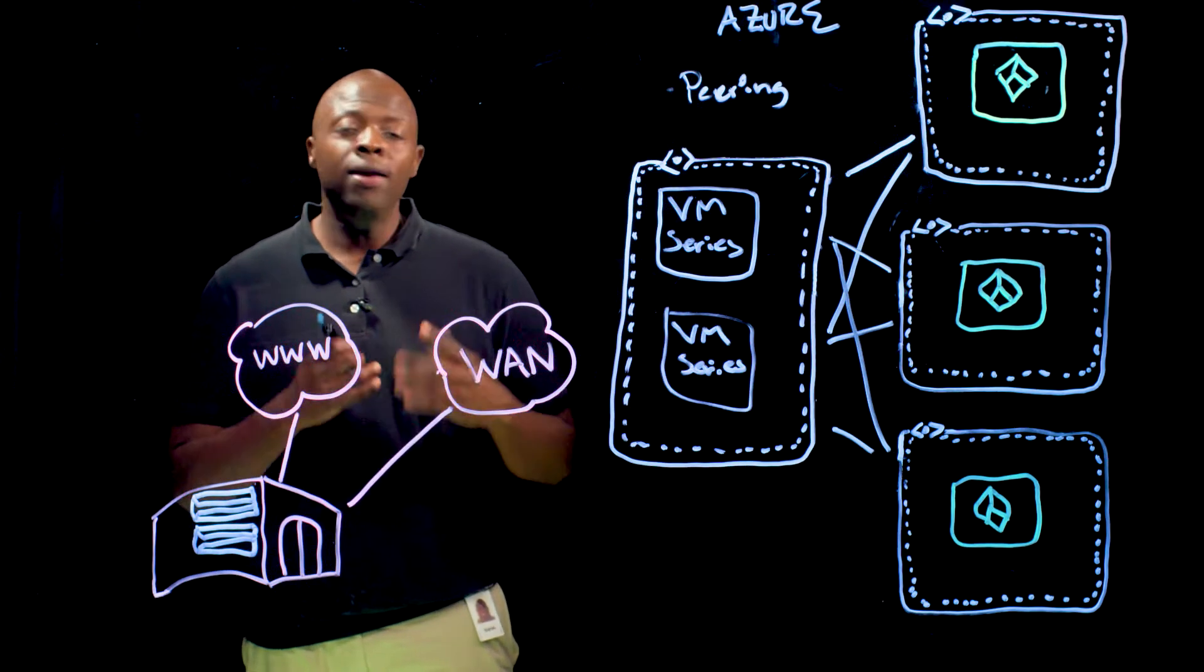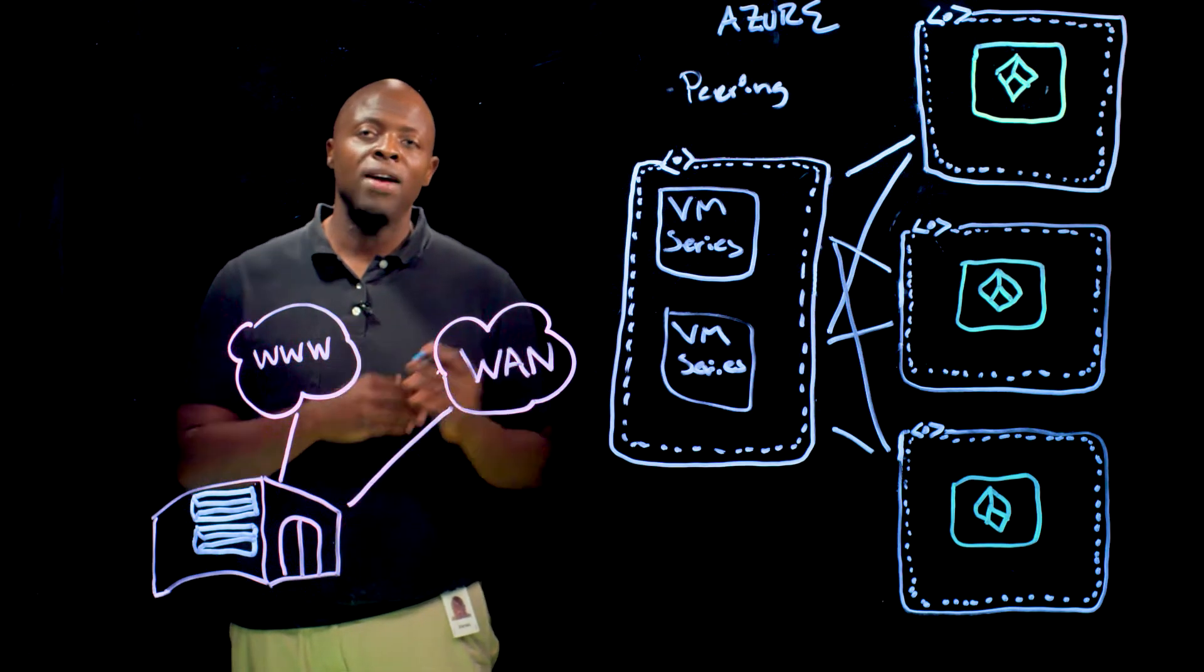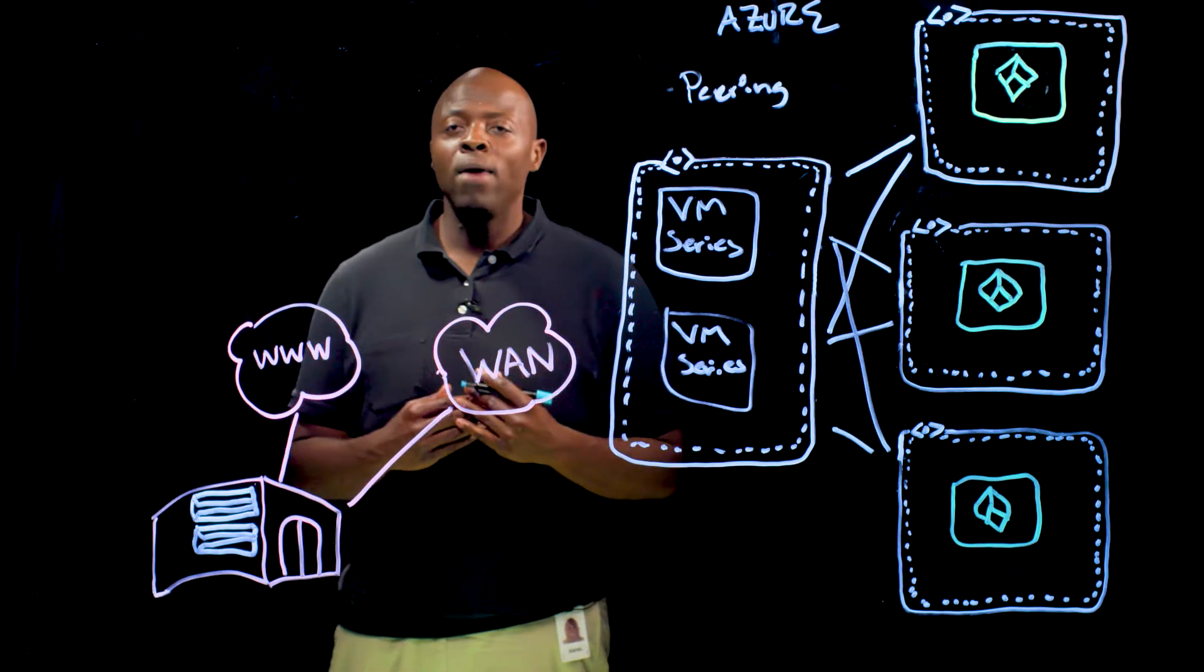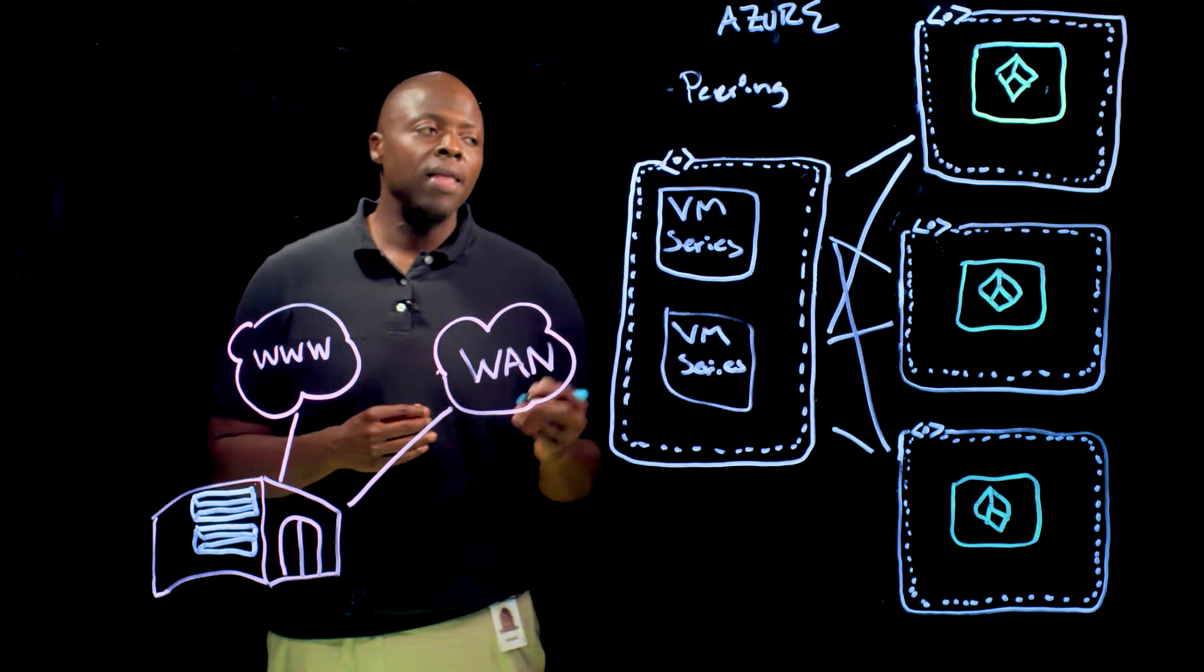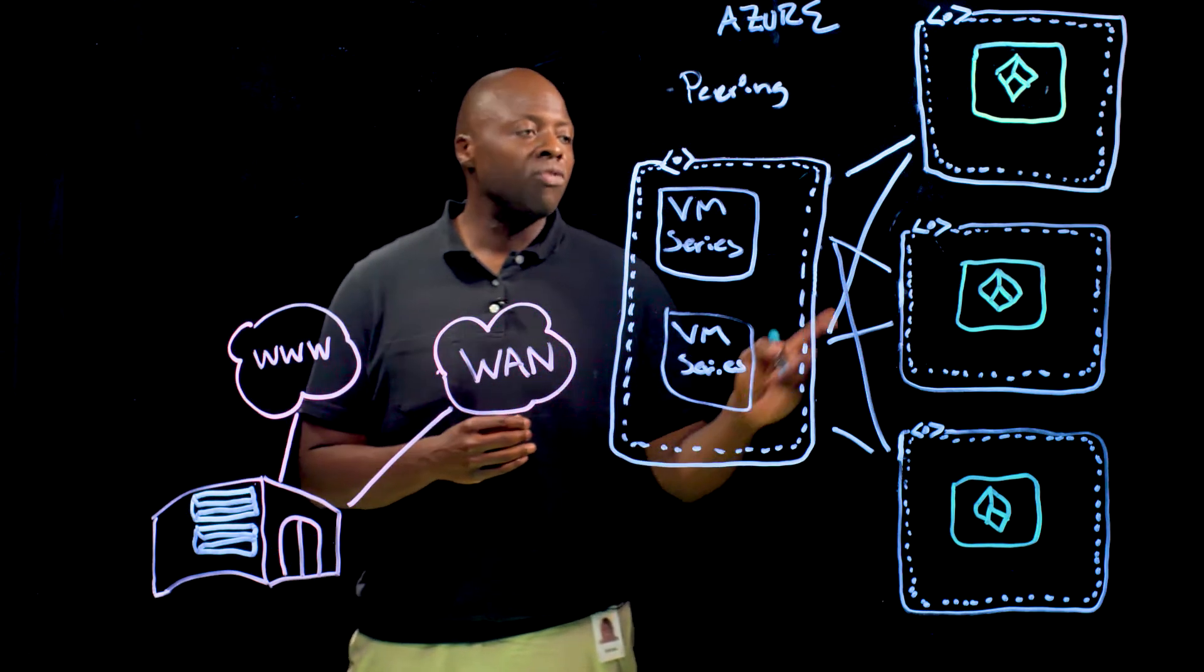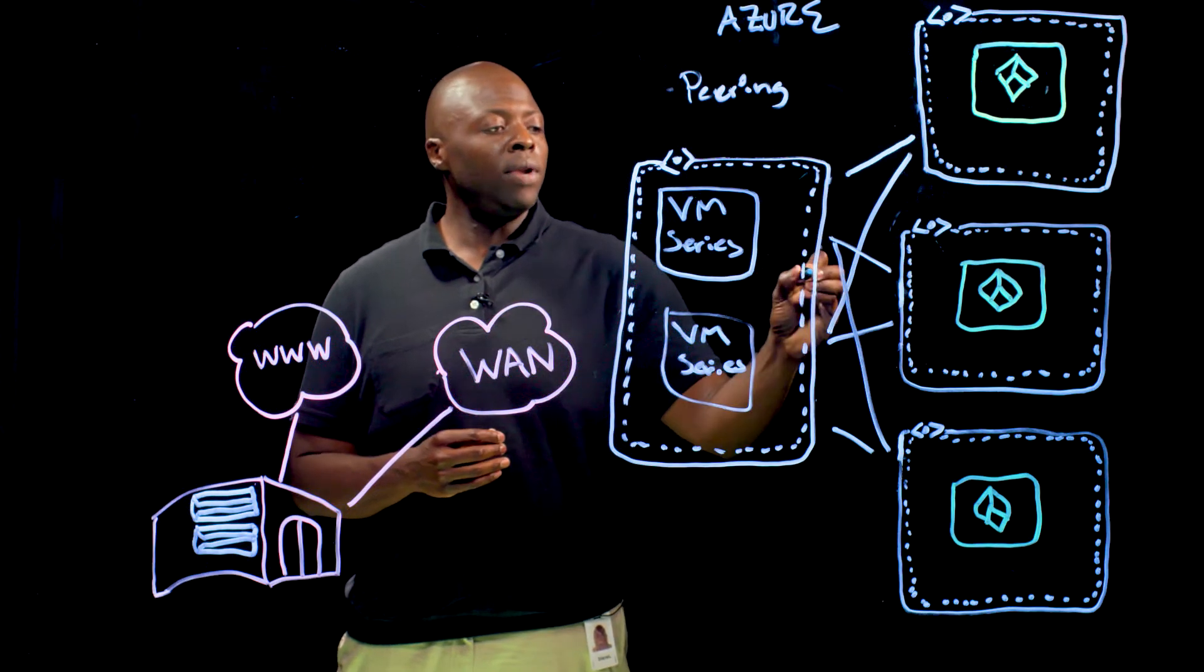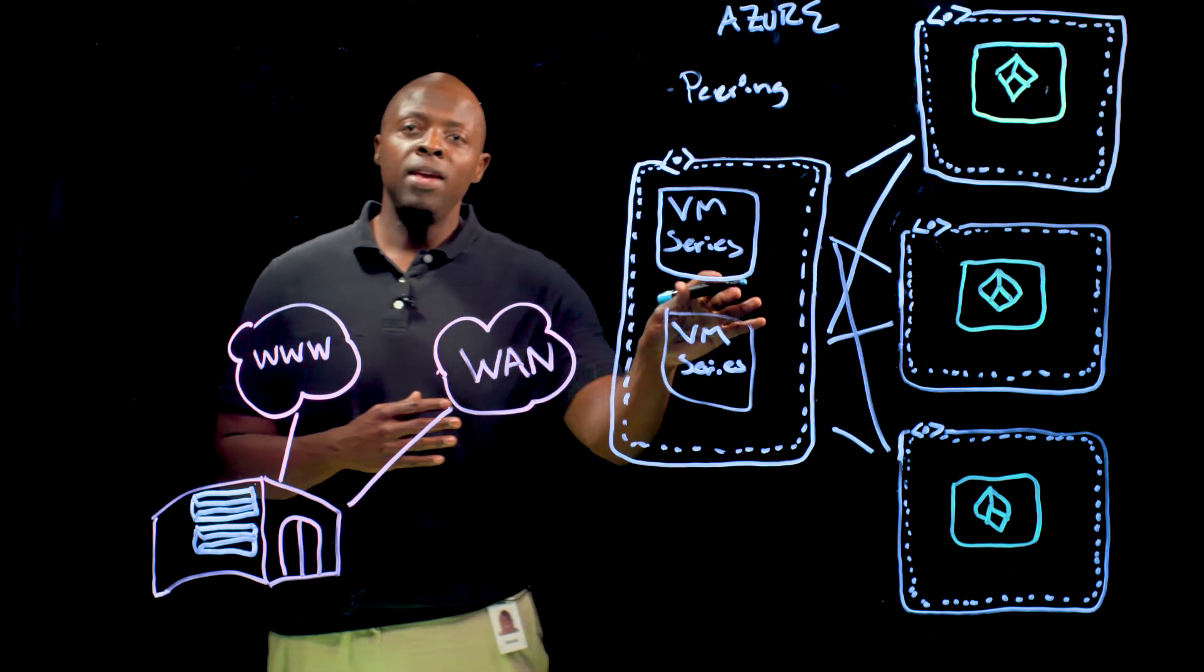Now, in conjunction with virtual network peering, we provide connectivity between the virtual networks using user-defined routes within Azure. These user-defined routes are automatically added via the template. What they do is send all traffic from each virtual network to an internal load balancer, an outbound load balancer within the Transit hub.